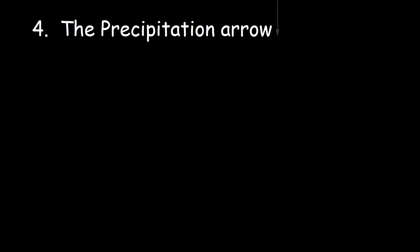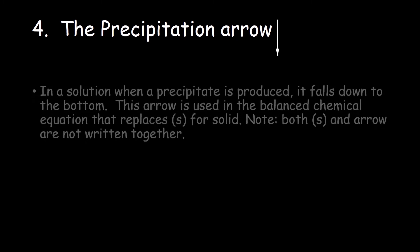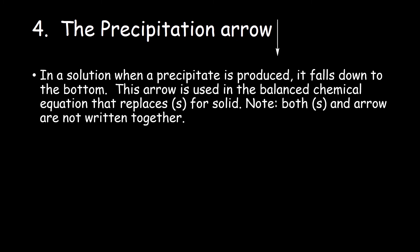Number 4. The precipitation arrow. In solution, when a precipitate is produced, it falls down to the bottom, hence the downward-pointing arrow. This arrow is used in a balanced chemical equation that replaces the S for solid. Note, both S and the arrow are not written together.